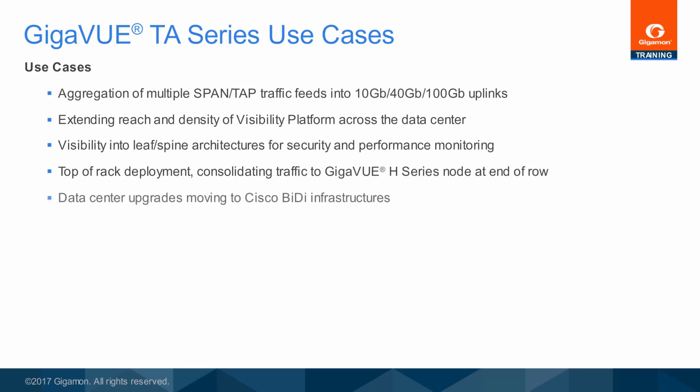As network technology changes and networks evolve, support for new technologies is added to Gigamon products. For example, adoption of Cisco BiDi technology is facilitated through Gigaview TA series support for BiDi. The visibility platform adapts to meet changing needs within your network, protecting your investment and extending the reach of your existing tools.